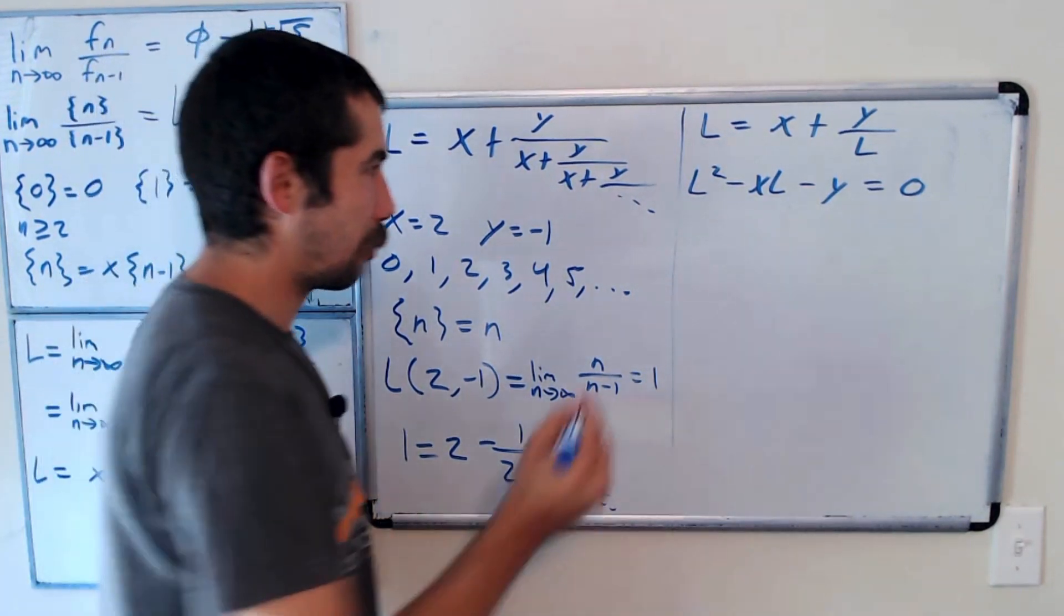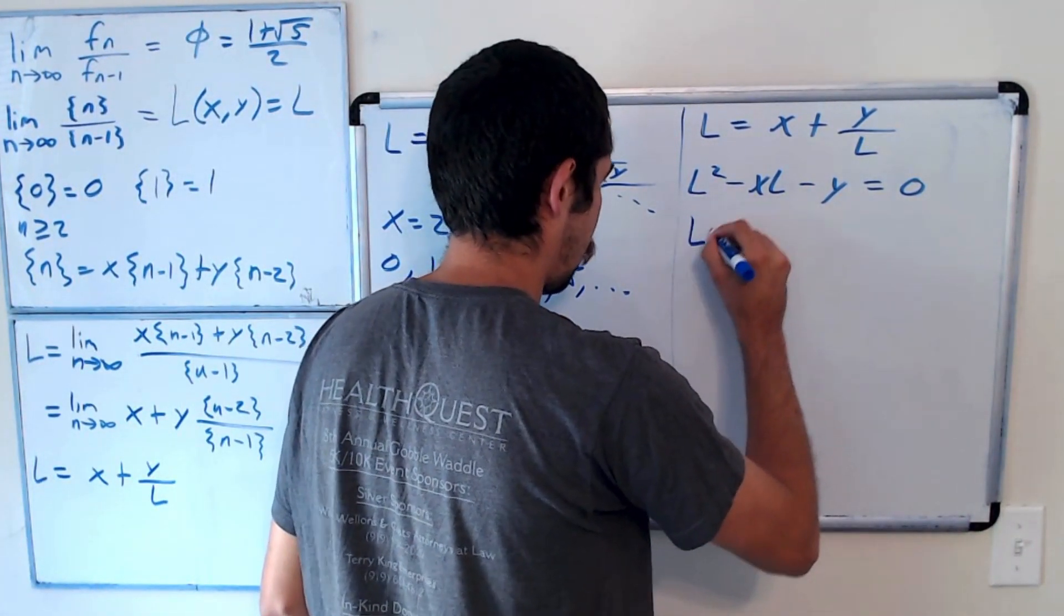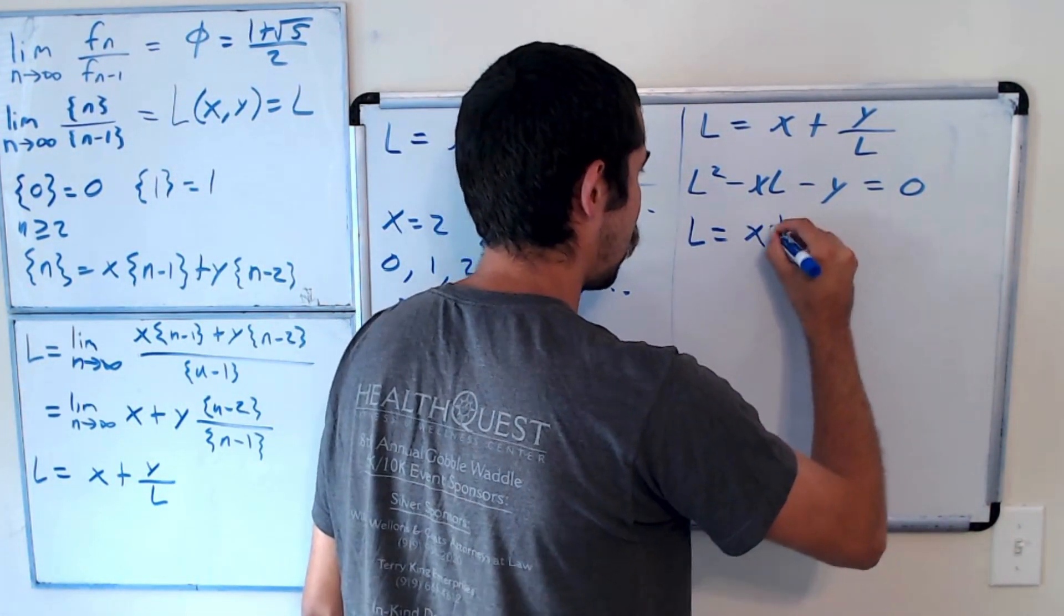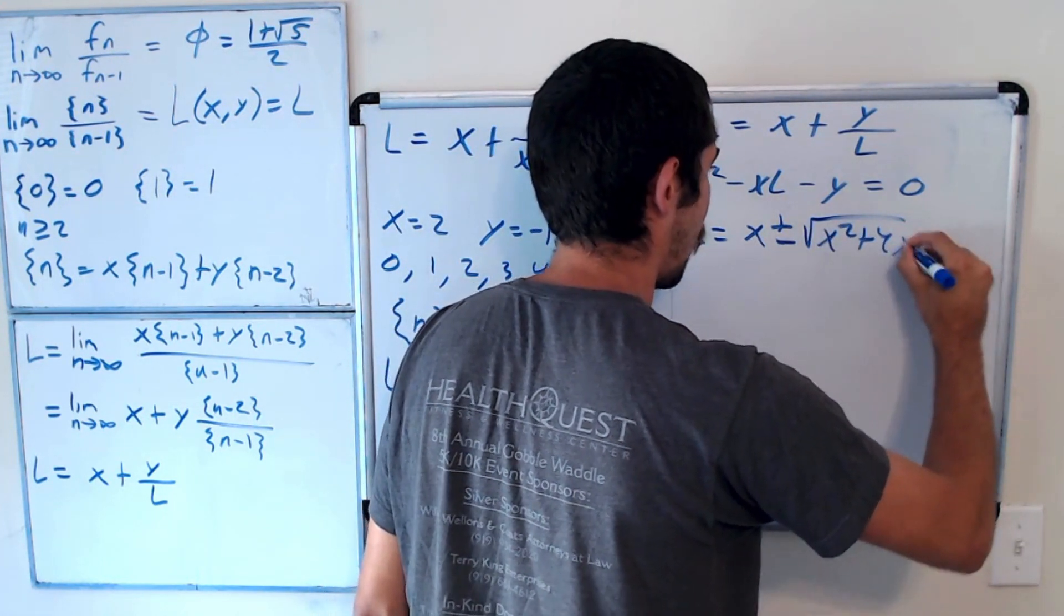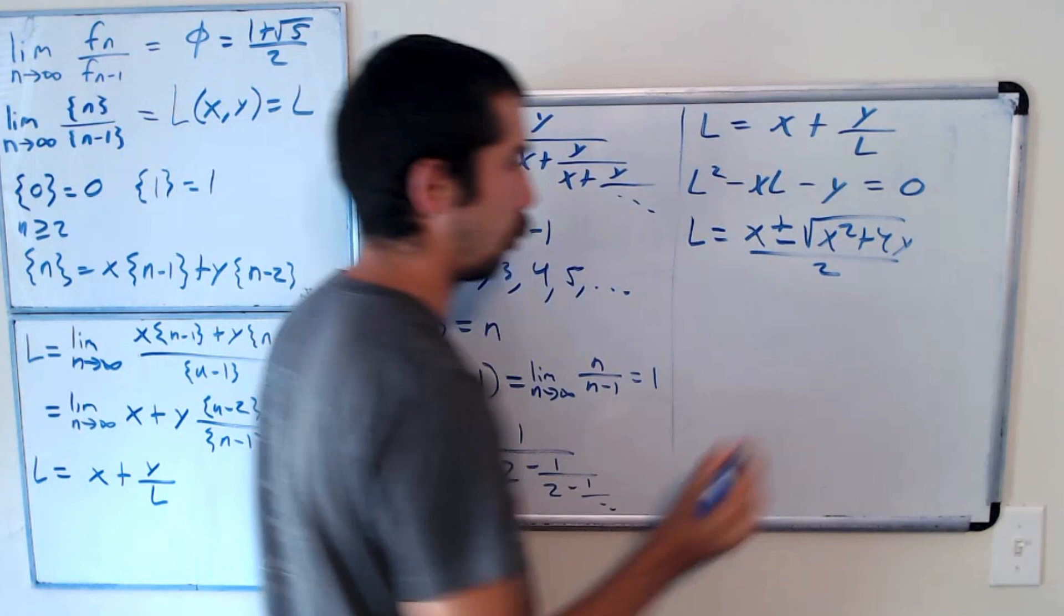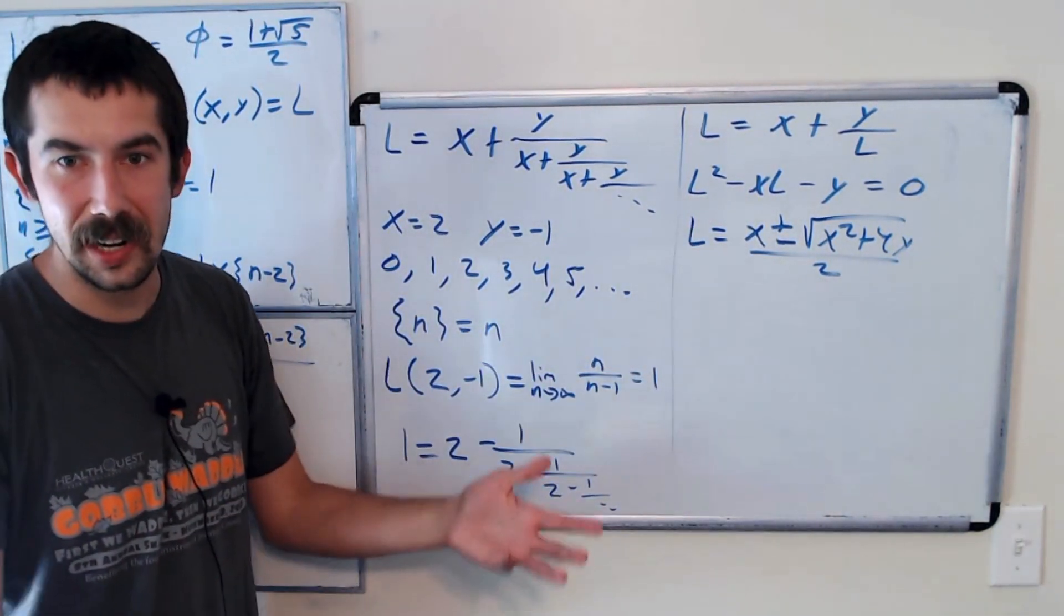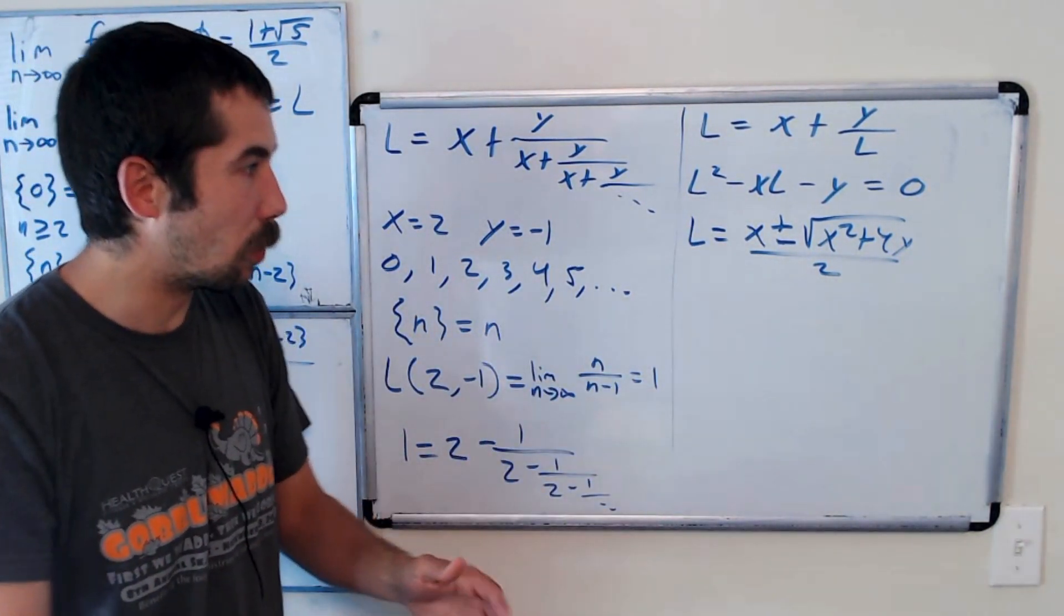So using the quadratic formula, we get L is equal to x plus or minus the square root of x squared plus 4y all over 2. And it depends on the context whether it's going to be plus or minus.